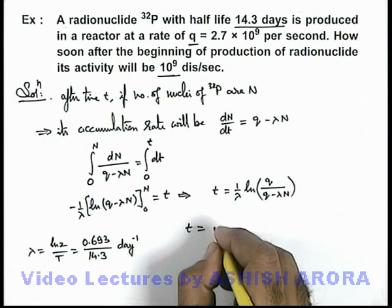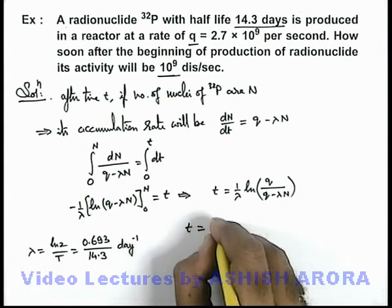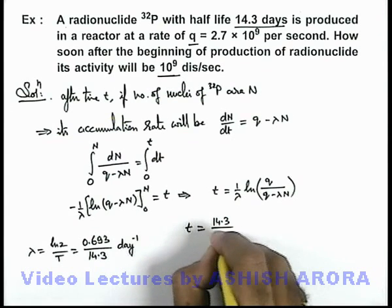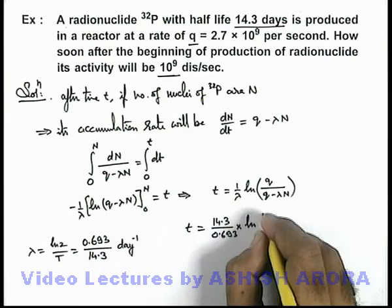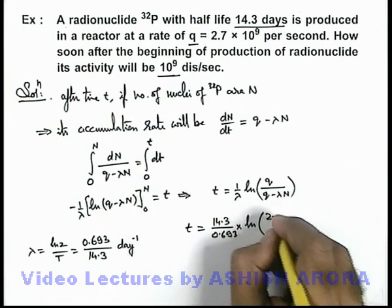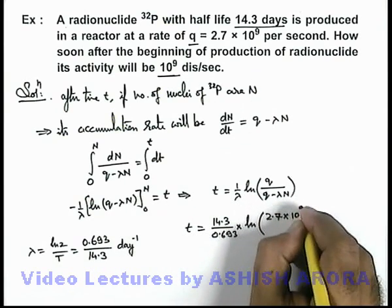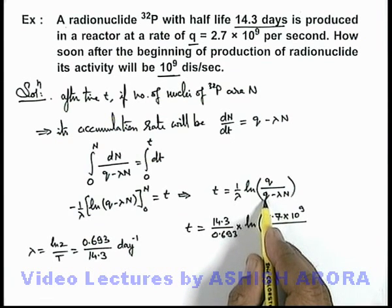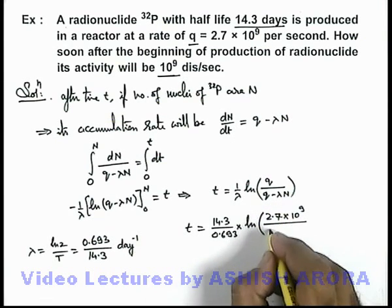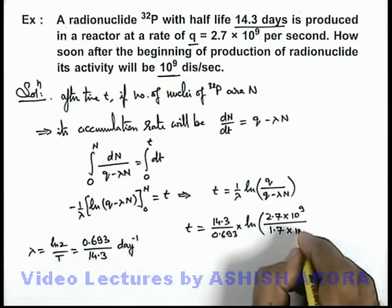When we substitute the values, 1/λ will be 14.3/0.693 multiplied by ln of q, which we're given as 2.7 × 10^9, divided by 2.7 × 10^9 minus 10^9, which will be 1.7 × 10^9.